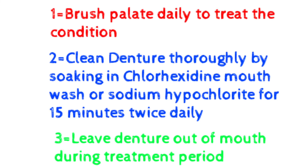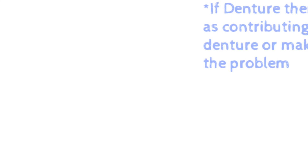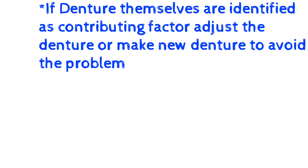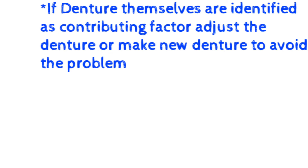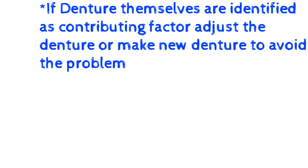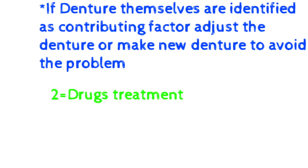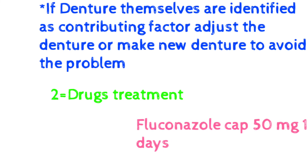Number three: leave the denture out of the patient's mouth during the treatment period, to relax the mucosa and tissue. These are the local measures. Next important point: if the denture itself is identified as a contributing factor in denture stomatitis, adjust the old denture or make a new denture to avoid the problem. If the patient does not show response to local measures, then go for drug treatment.